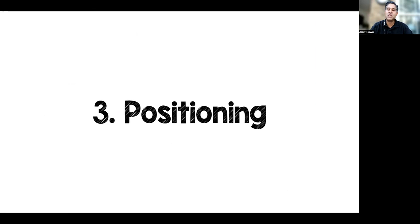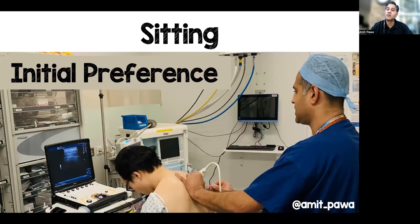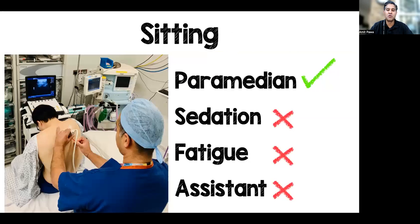What about positioning of the patient? Broadly speaking there are three options: sitting, lateral or semi-prone, or prone. I started with all of my patients in the sitting position for the first three years of paravertebral block insertion. It's great for the paramedian sagittal approach, but once you start using sedation it becomes slightly problematic.